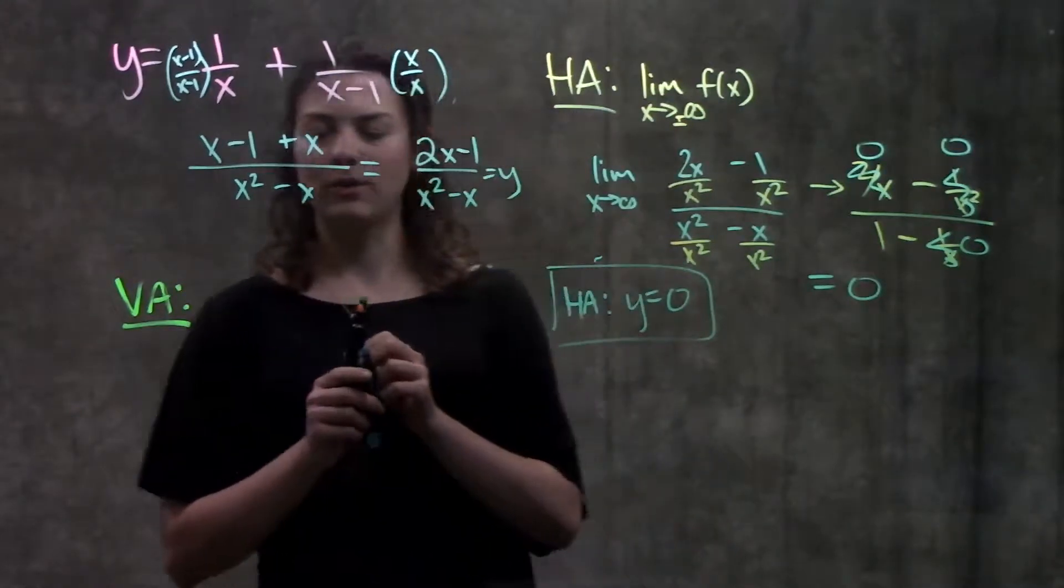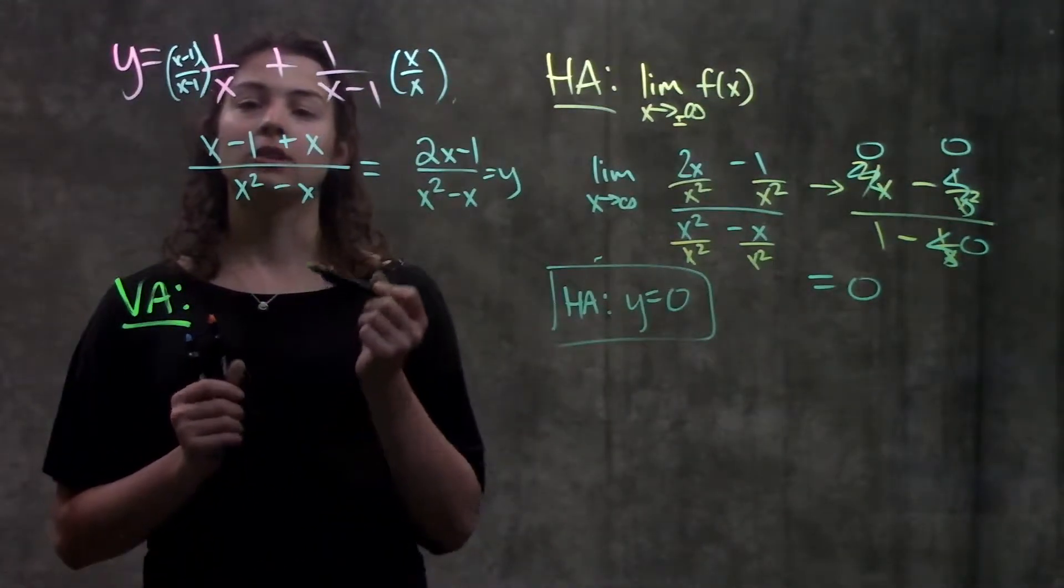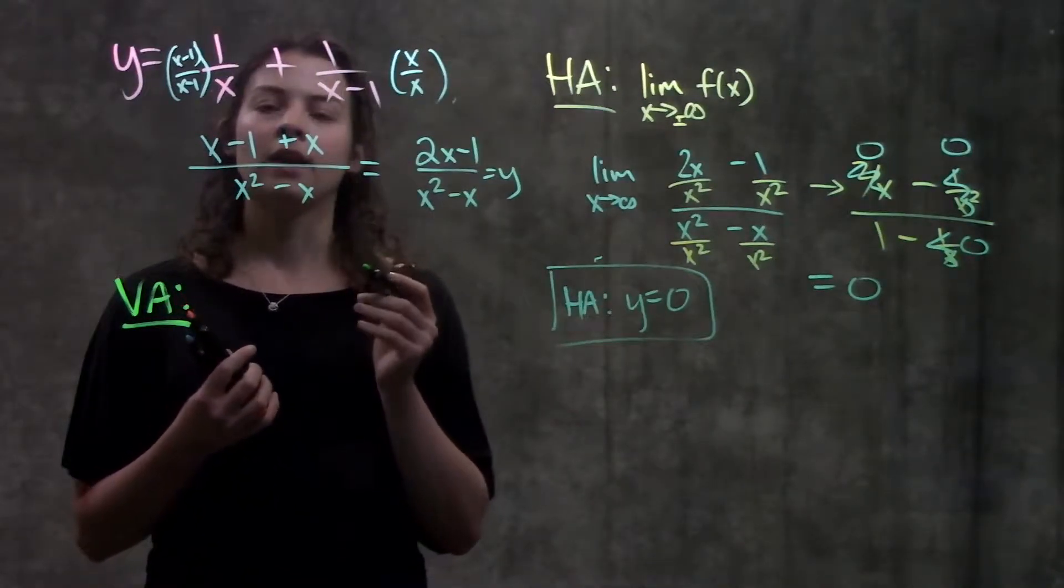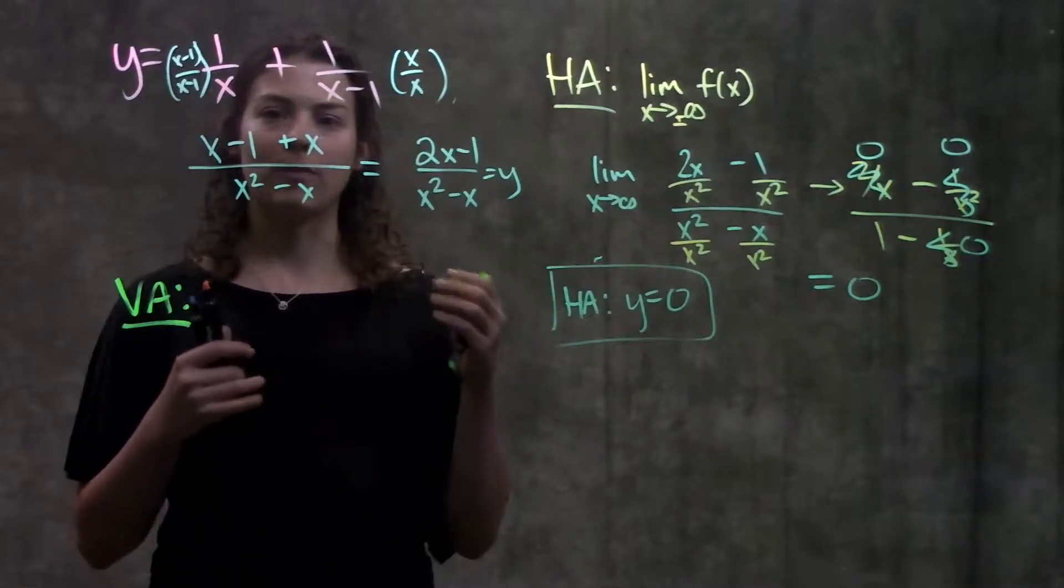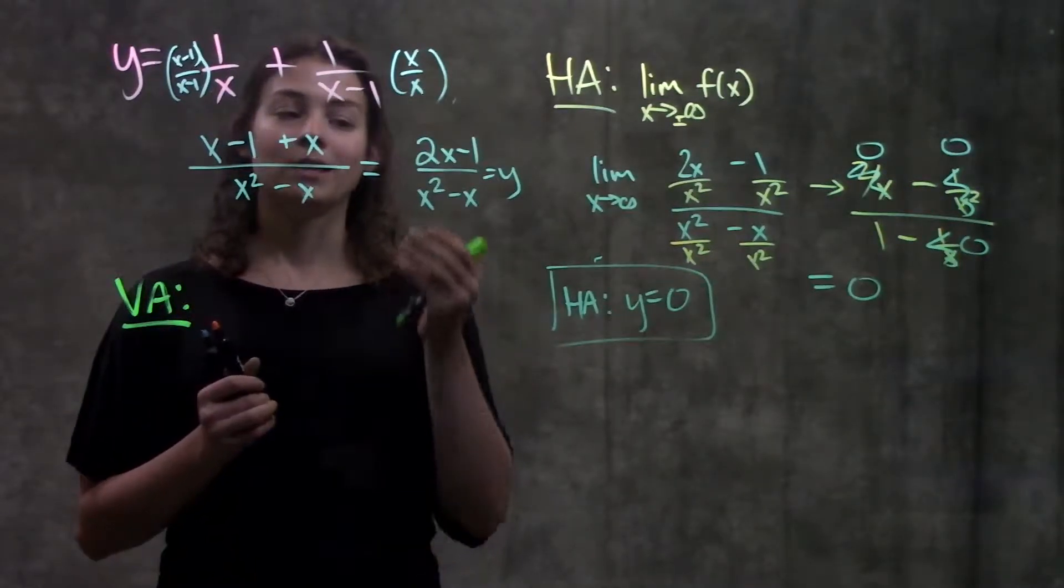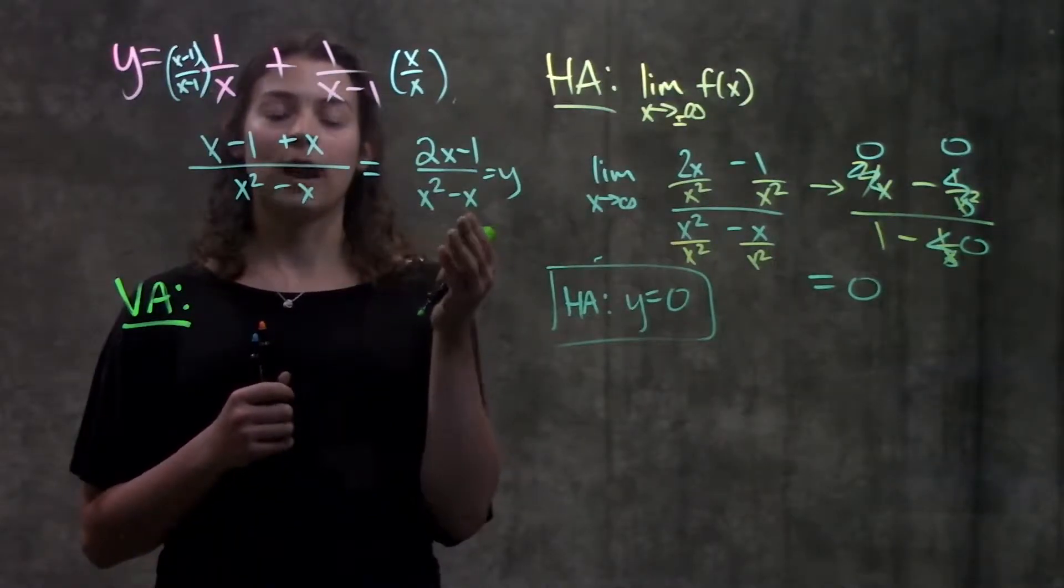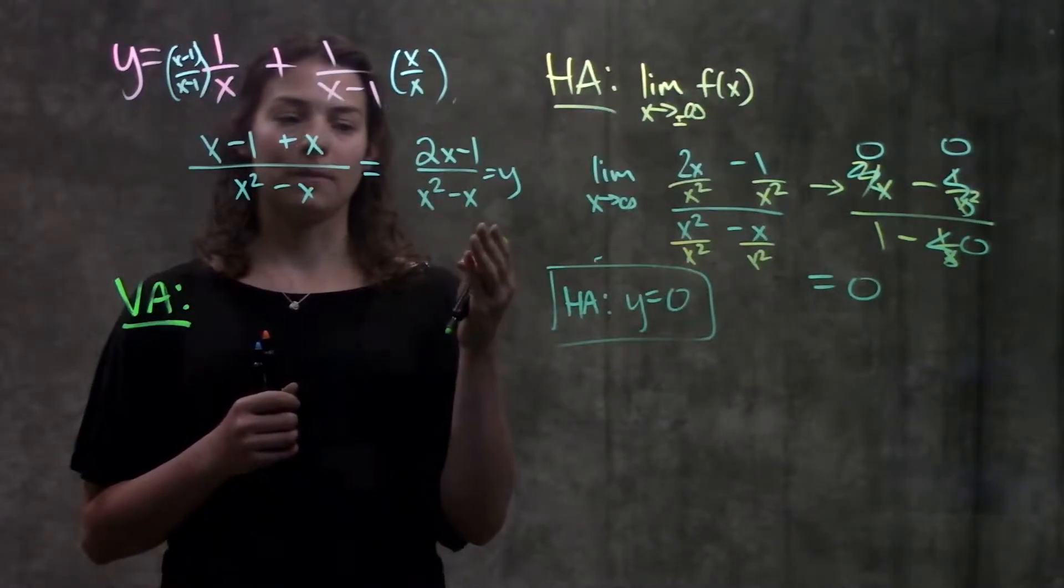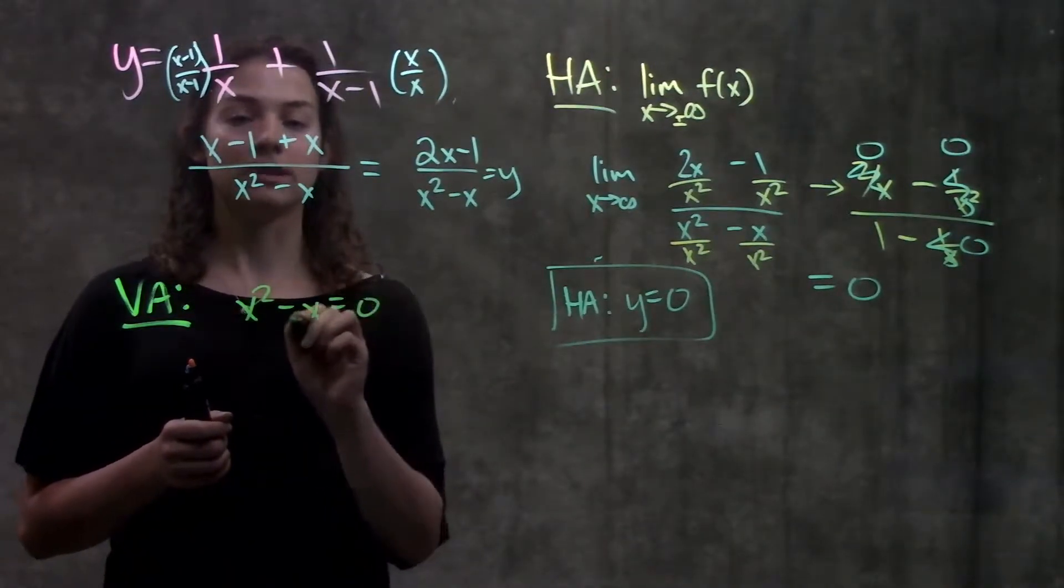Moving on to my vertical asymptote. Vertical asymptotes are wherever the function is undefined. So you want to go through your function and think alright is there any x value where if I were to plug it into this function I wouldn't get a valid answer. It's kind of nice with fractions because you know that this function will be undefined wherever the denominator equals 0. So we can take our denominator and just set it equal to 0 solve for x.